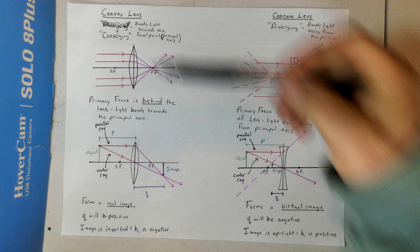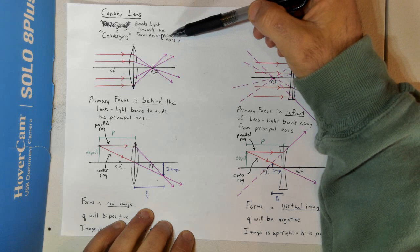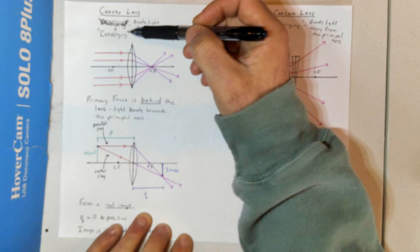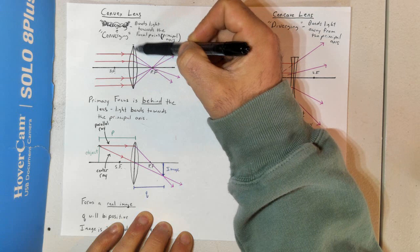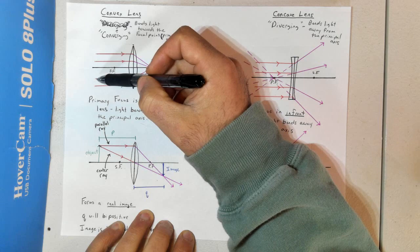The first thing we're going to talk about is a convex lens. A convex lens is known as a converging lens — it's converging because it's going to bend light towards the focal point or towards the principal axis. We draw a line called the line of action, so we can have all these lights bending at the same point. Light comes in and bends towards the principal axis.